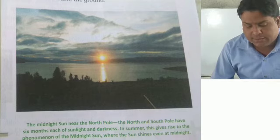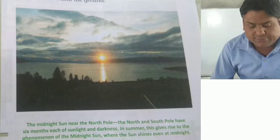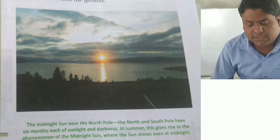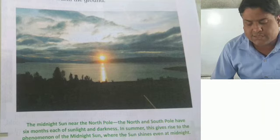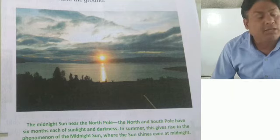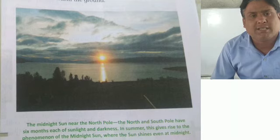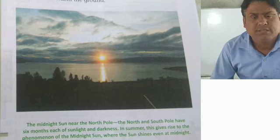The polar type of climate is found between the Arctic Circle at 66.5 degrees North and the North Pole at 90 degrees North in the Northern Hemisphere, and between the Antarctic Circle at 66.5 degrees South and the South Pole at 90 degrees South in the Southern Hemisphere. So, going upward it will be 66.5 degrees to 90 degrees — this is the region of the frigid zone.